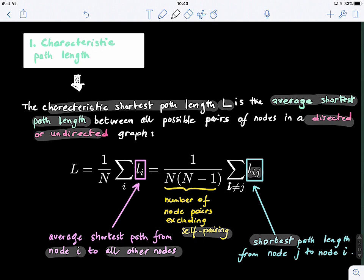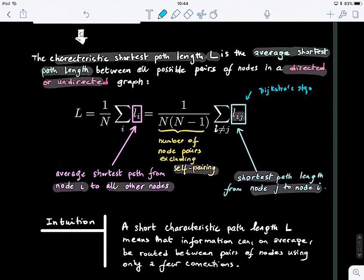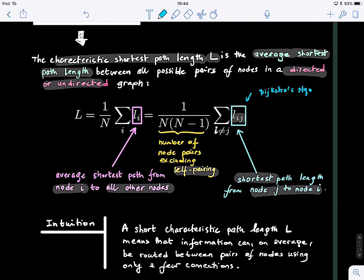For an undirected graph, we can use Dijkstra's algorithm to find the shortest path and implement this formula. The characteristic path length allows us to quantify the routing property of a graph on average. We look at all shortest paths between all nodes in the graph, and this path length means that information can on average be routed between pairs of nodes using only a few connections.